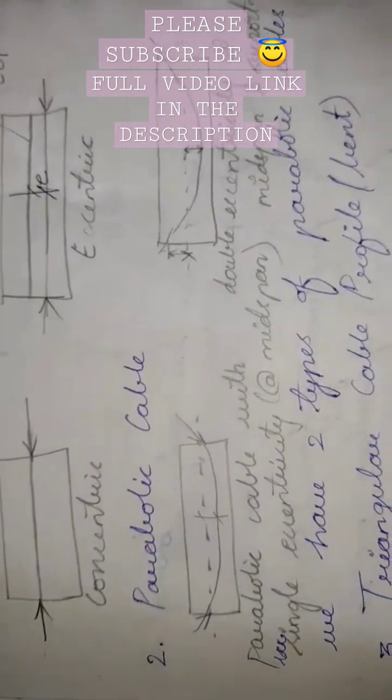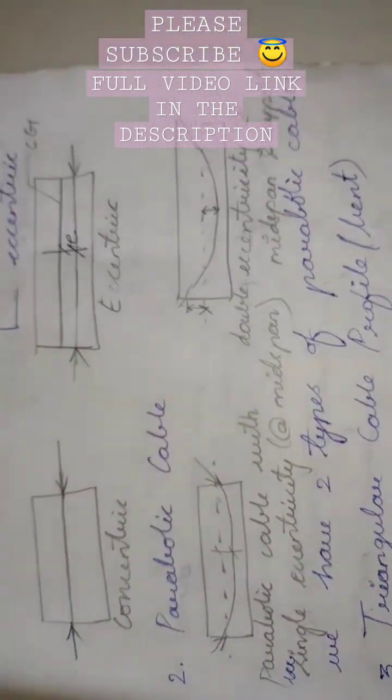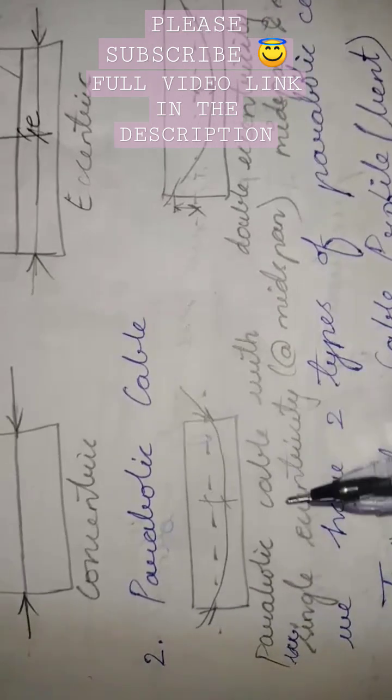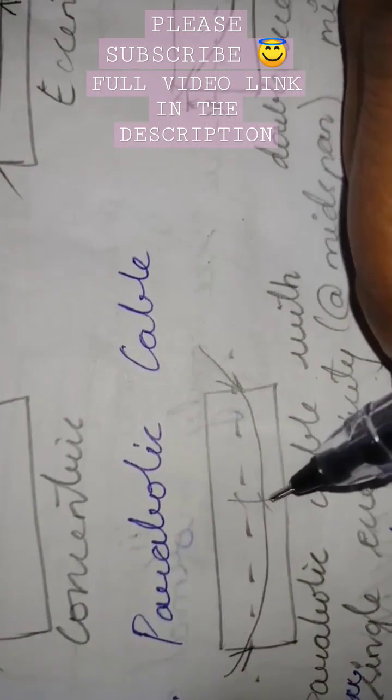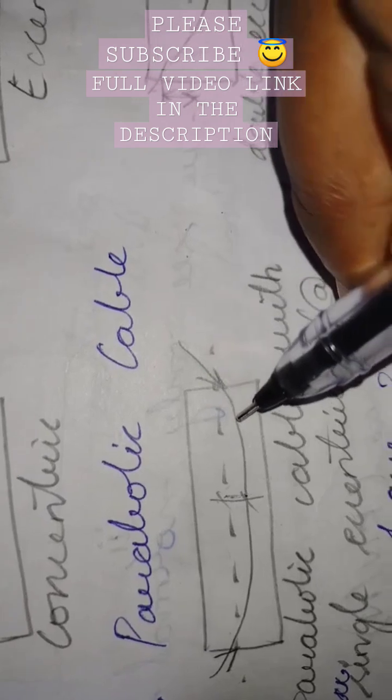Next, we have parabolic cable. This also has two subdivisions: parabolic cable with single eccentricity, which means at mid-span it has some eccentricity, but at the corners it passes through the neutral axis only.